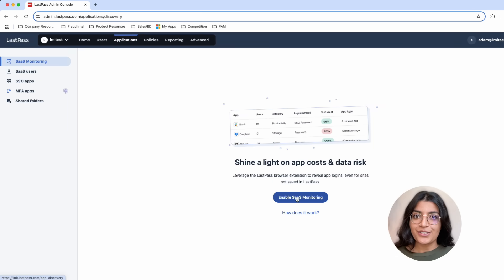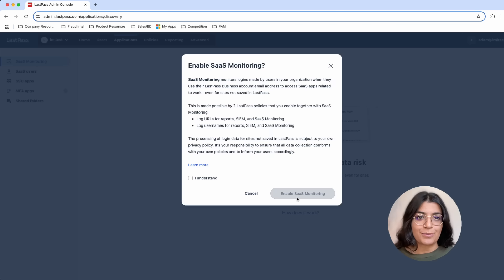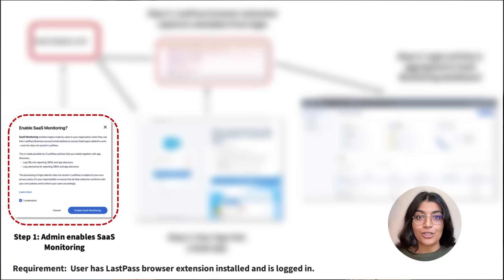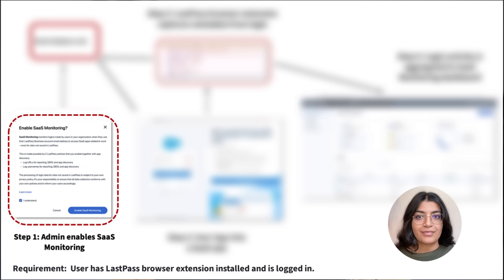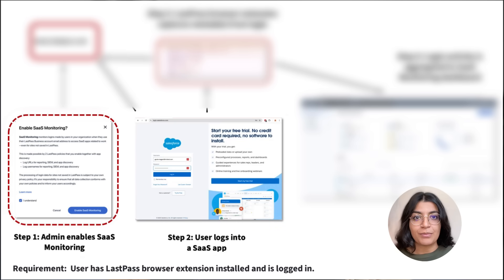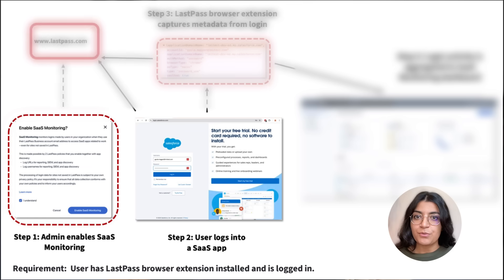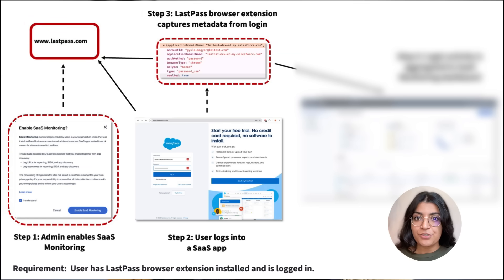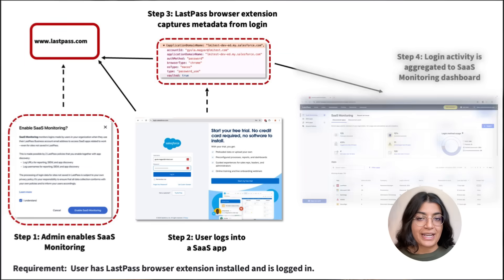And how does it work? First, an admin needs to enable SaaS monitoring in the LastPass admin console. It's best to have the LastPass extension deployed throughout your organization, because users need to be logged into the extension for monitoring to work. Whenever they use their LastPass email to log into any business application, LastPass will automatically capture their login activity and aggregate it into a comprehensive dashboard.